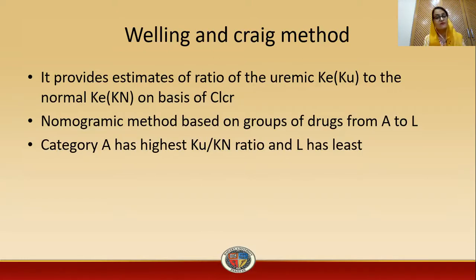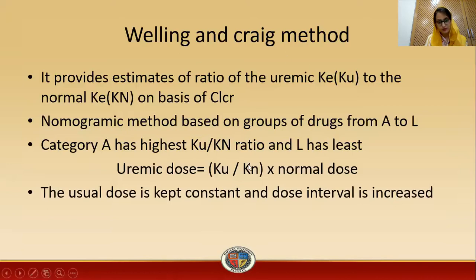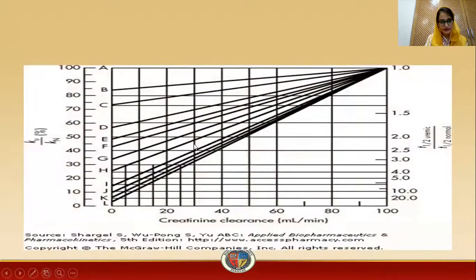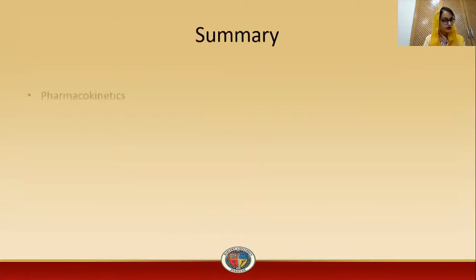The Welling-Prag method provides an estimate of the ratio of uremic KE (KU) to normal KE (KN) based on creatinine clearance. It is a nomographic method based on groups of drugs from A to L, where category A has the highest KU/KN ratio and L has the least. The uremic dose is calculated as: uremic dose = (KU / KN) × normal dose, keeping the usual dose constant and increasing the dose interval.